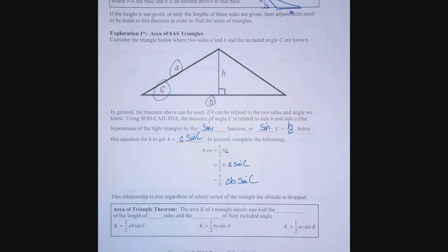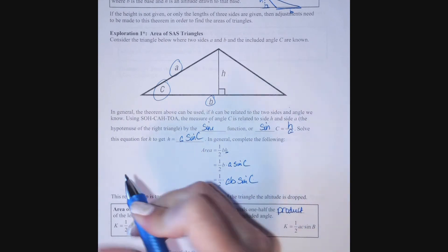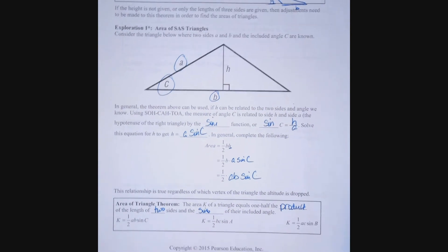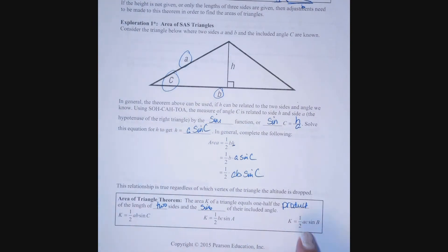So that I have one-half AB times the sine of C. Now this is going to be true, this product, this pattern is going to be true for any of the angles of the triangle. The area of a triangle is equal to the product of the sine of any angle with one-half the product of the other two sides. So I can take one-half the product of the length of two sides and the sine of their included angle. Here we have it, one-half AB sine C or one-half BC sine A or one-half AC sine B.